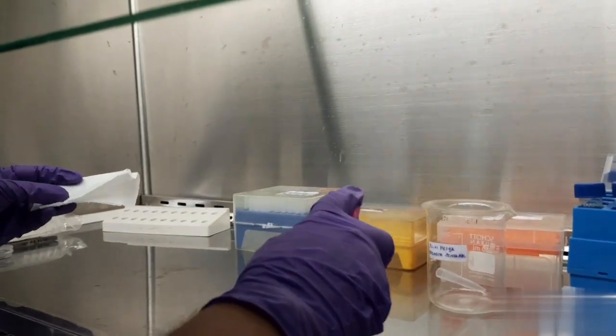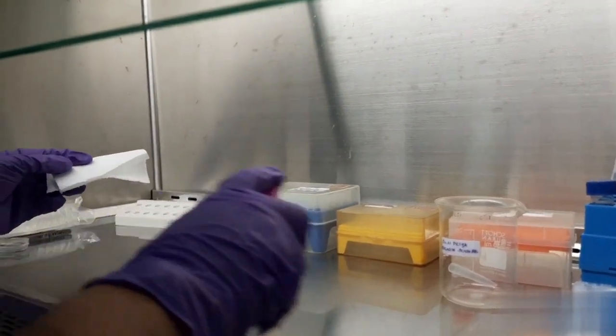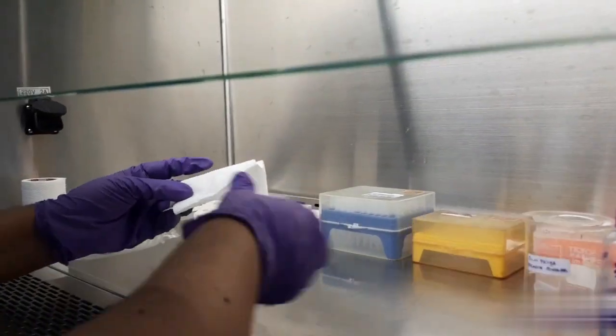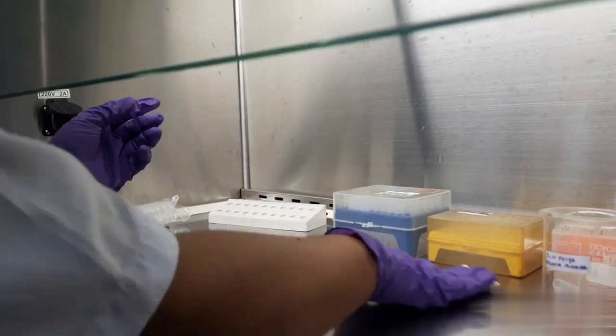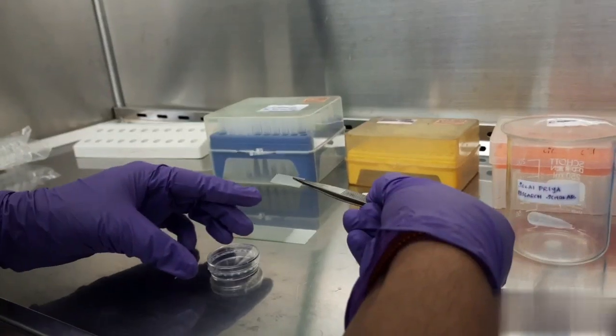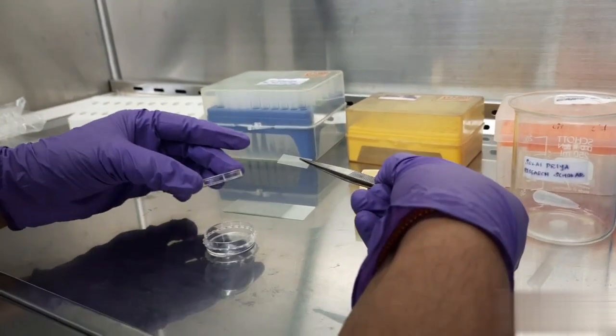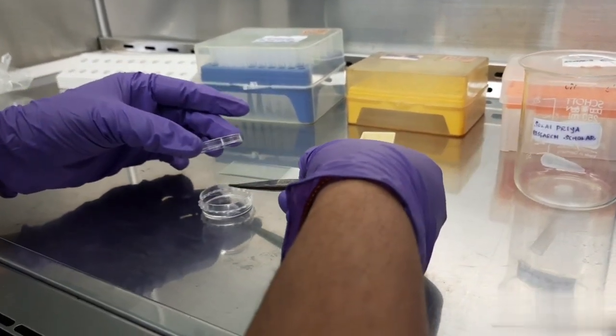The first step is to disinfect the working area. I am going to spray some amount of ethanol and then wipe the working space. Take a cover slip and place it inside a petri plate.